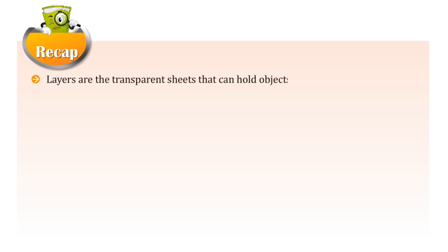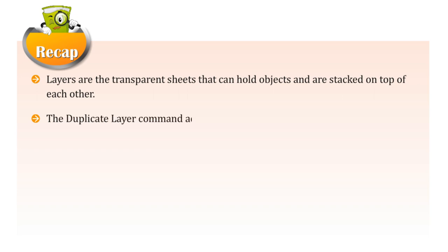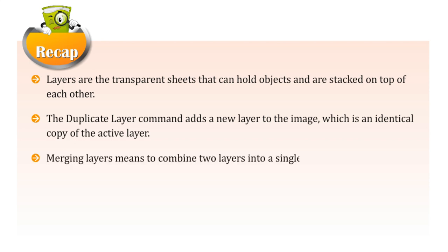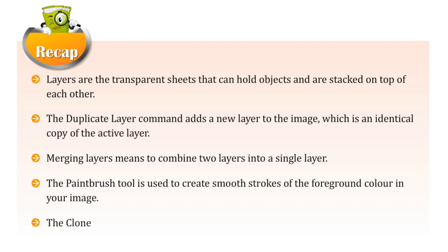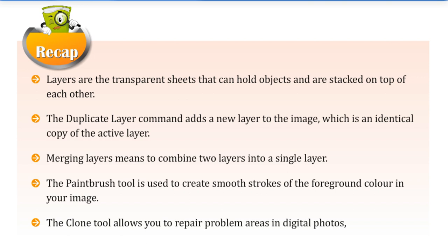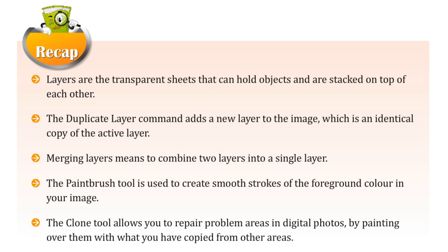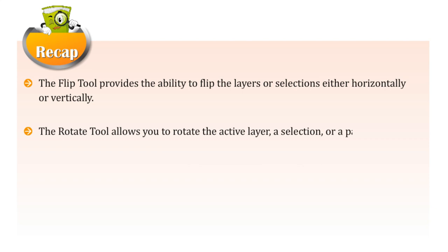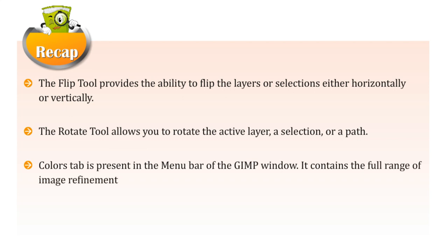Let us take a recap of this chapter. Layers are transparent sheets that can hold objects and are stacked on top of each other. The Duplicate Layer command adds a new layer which is an identical copy of the active layer. Merging layers means to combine two layers into a single layer. The Paint Brush tool is used to create smooth strokes of the foreground color. The Clone tool allows you to repair problem areas in digital photos. The Flip tool provides the ability to flip layers or selections either horizontally or vertically. The Rotate tool allows you to rotate the active layer, a selection or a path. The Colors tab in the menu bar contains a full range of image refinement commands such as color balance, brightness, and hue saturation.